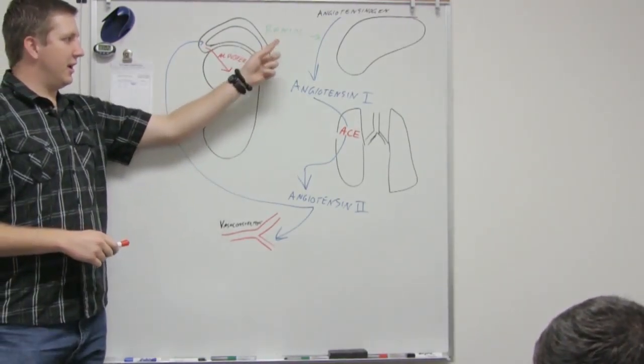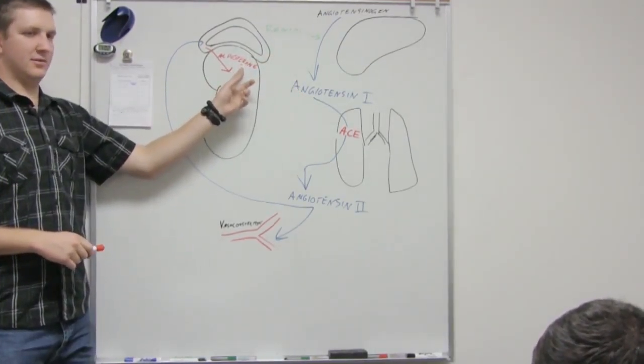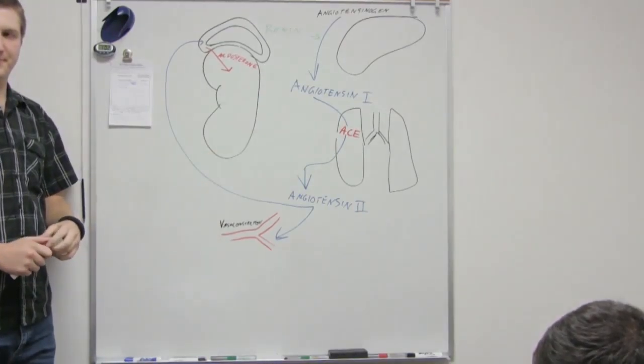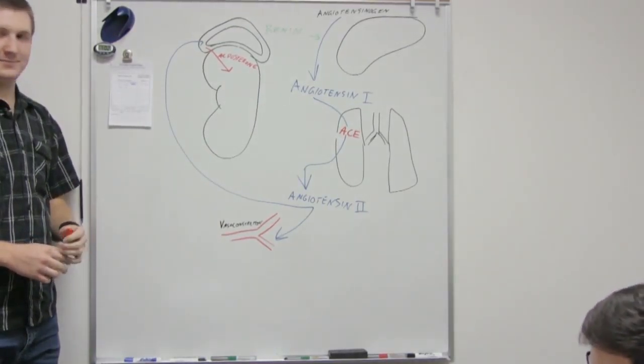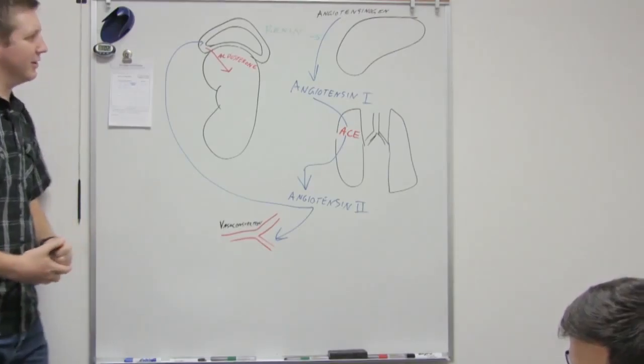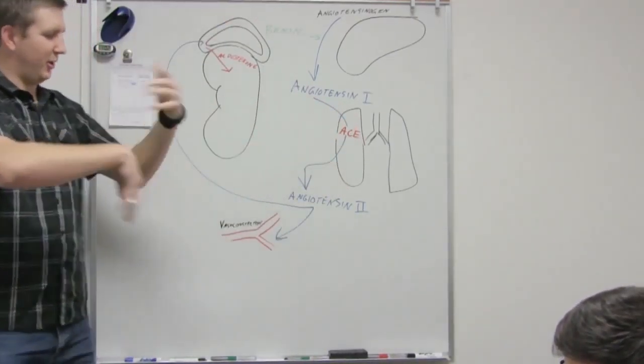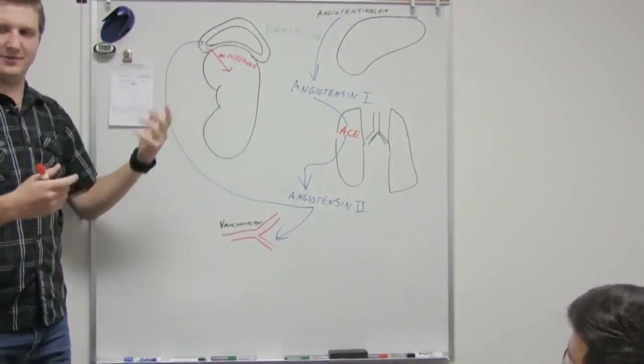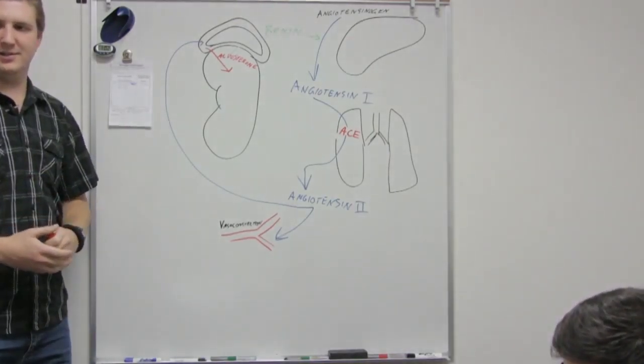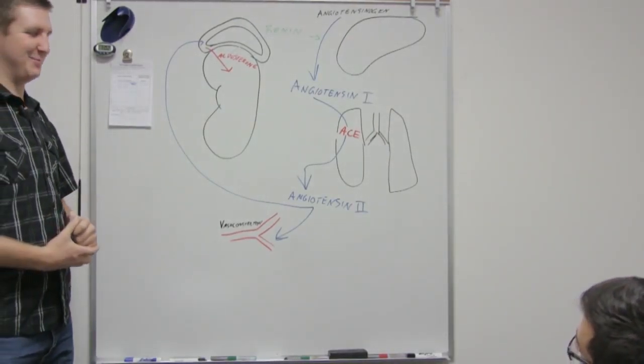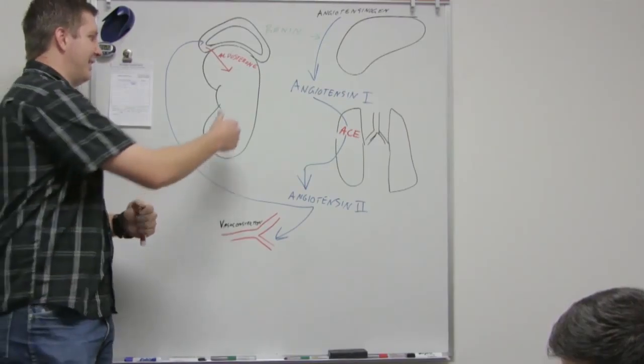So you have the renin, angiotensin, aldosterone mechanism. That was a big circle, just to get back to the same thing. Yeah, so why in the world would the kidney send out a signal to go through this whole big process just to tell the kidney itself to do something? Why doesn't the kidney just do it? Because it's bored. Because it's bored. Because it's just the way it is, right?